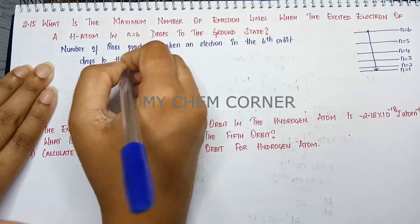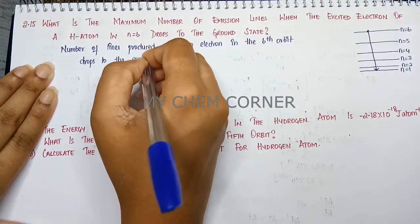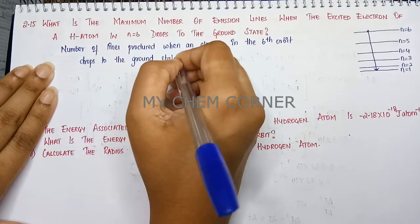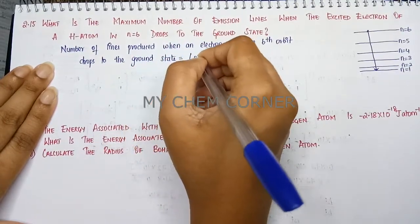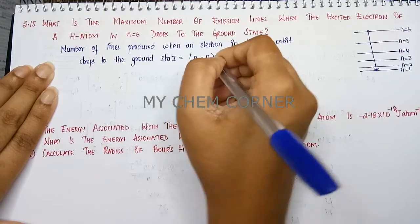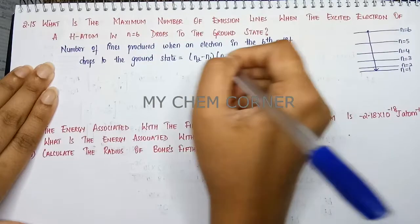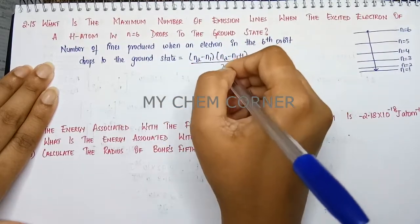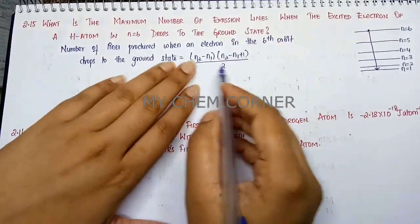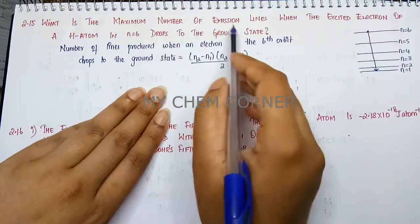It equals (n2 minus n1) times (n2 minus n1 plus 1) divided by 2. So this is going to be the formula that you will use in order to calculate maximum number of emission lines.